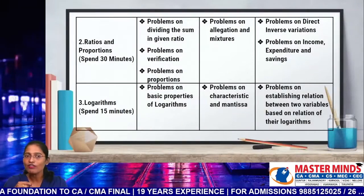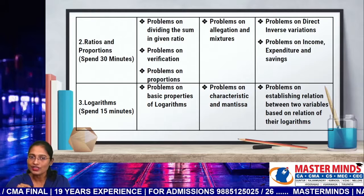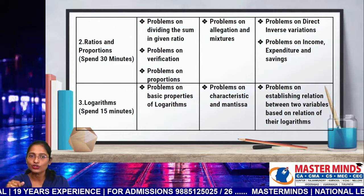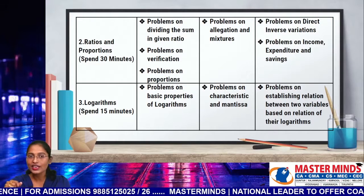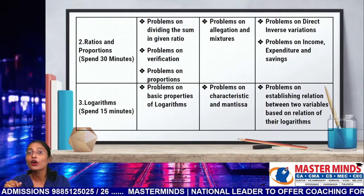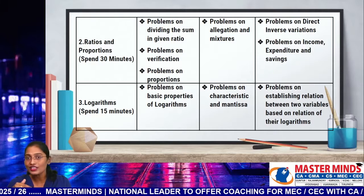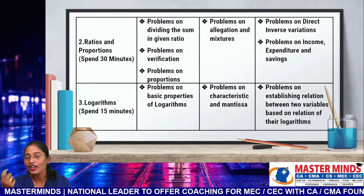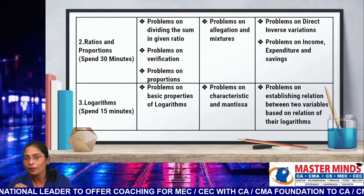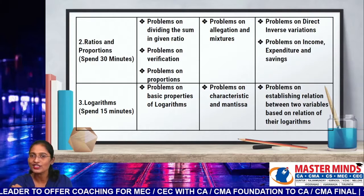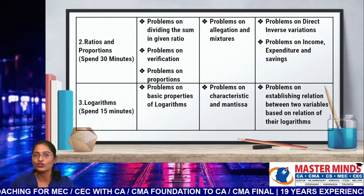The next topic to be revised is Ratio and Proportions. Try to spend 30 minutes on ratio and proportions. First priority models: problems on dividing a particular sum in a given ratio, problems on verification, and problems on proportion — whether normal proportion or continued proportion. Second priority: problems on allegations and mixtures. Third priority: problems on direct and inverse variations. Income, expenditure, and savings-related MCQs are considered least priority models of ratios and proportions.